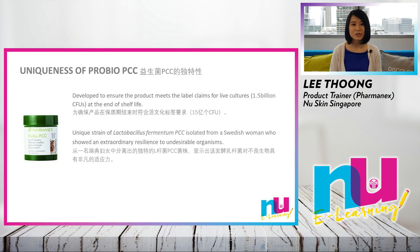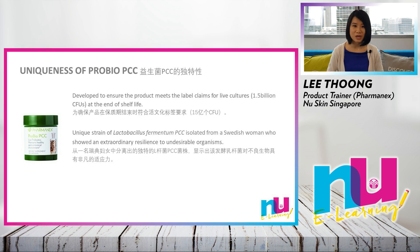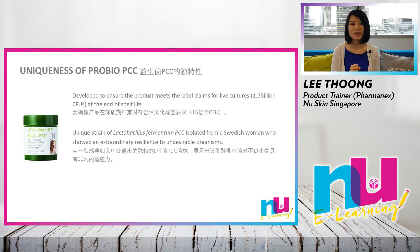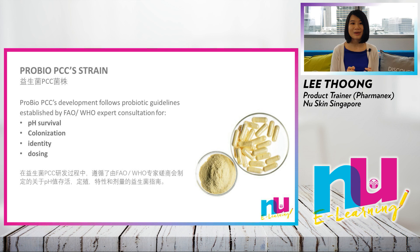What is so unique about our Probio PCC? A good probiotic product should contain an adequate amount of live microorganisms to provide intended health benefits. The scientific and analytical methods used in development of Probio PCC ensure the product contains at least 1.5 billion CFU per serving at the end of shelf life. The strain Lactobacillus fermentum PCC was isolated from a Swedish woman who showed an extraordinary resilience to undesirable organisms.